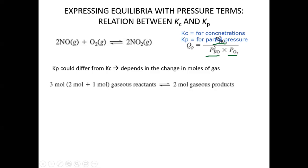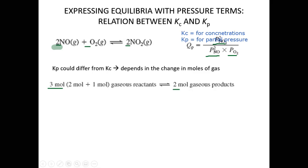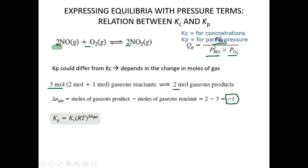For example, in the reaction 2 NO + O2 → 2 NO2, there are three moles of reactant gases and two moles of product gases, so Δn = 2 − 3 = −1. Because there's a change in moles of gas, Kp will differ from Kc. Using Kp = Kc(RT)^Δn with Δn = −1, we can rearrange to find Kc = Kp × RT.